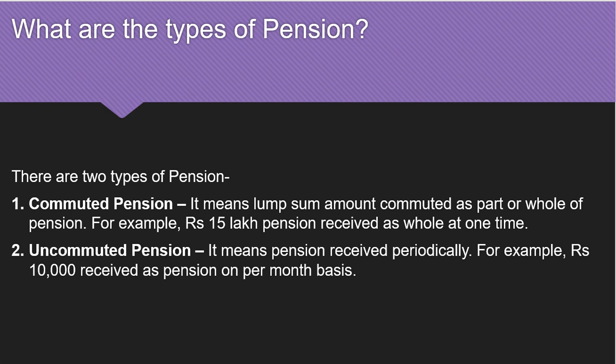First one is commuted pension and second one is uncommuted pension. Commuted pension means a lump sum amount commuted as part or whole of pension. For example, rupees 15 lakh pension received as a whole at one time. So commuted pension means a lump sum amount.